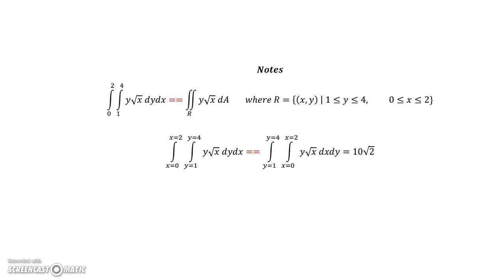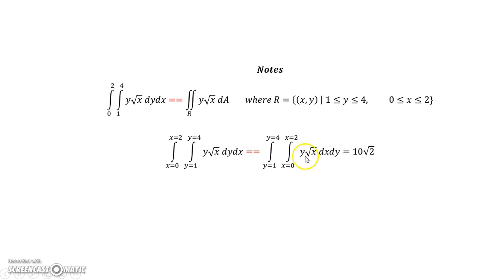There is another important note: because our limits of integration here are only numbers, we can always switch the order of integration. This is called Fubini's theorem. You can switch between dy dx and dx dy, and if you do it step by step, you'll end up with exactly the same answer — you might start with y being constant and integrate x first, and so on.